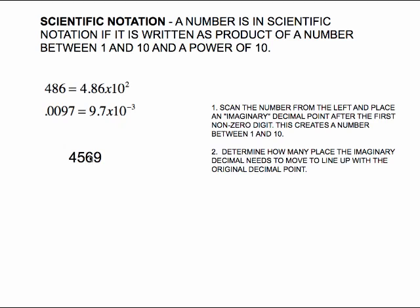We have to come up with rules for getting these two parts — the first number and the power of 10. The first thing you want to do is scan the number from the left and place what I call an imaginary decimal point after the first non-zero digit. I actually just put a little caret right there. Scanning in from the left, I see my first digit, then I put my imaginary decimal point right behind it. This automatically creates a number between 1 and 10.